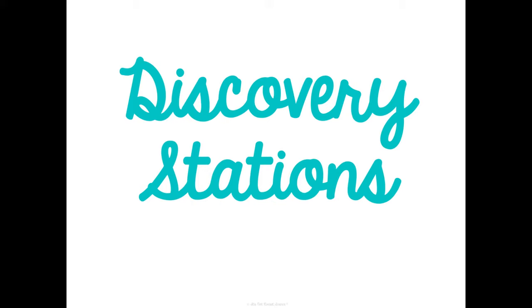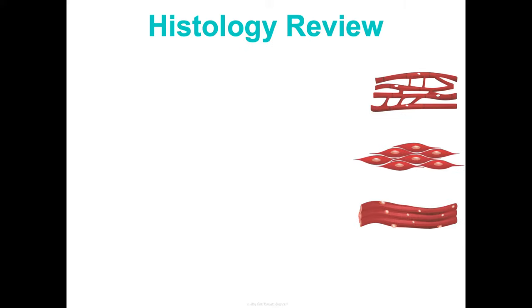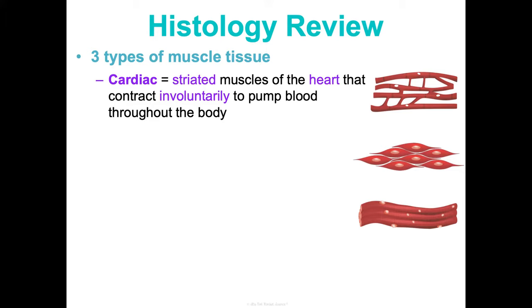This is where we'll pause in class to learn about different muscle names and their roles as prime movers, antagonists, and synergists. Before we get into the structure of muscles, a quick histology review from unit one: there are three types of muscle tissue. There's cardiac muscle tissue, which is striated and makes up your heart.